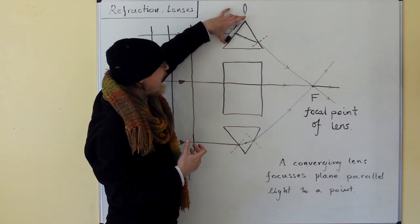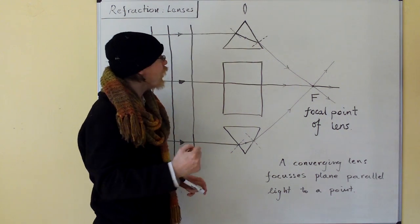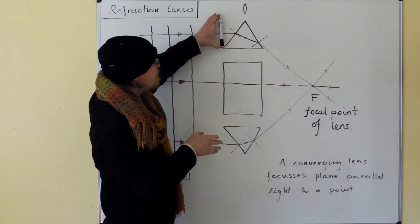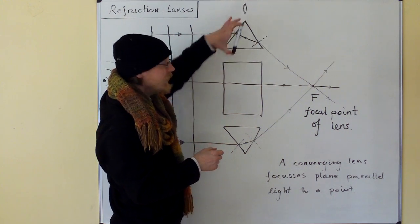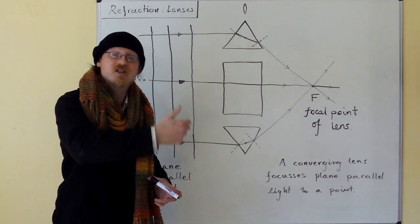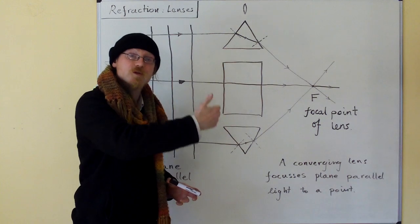So this tends to bend the light towards the normal. The normal here at right angles to the boundary, and the light is being bent towards the normal in going from a less dense medium into a more dense medium, slowing down and being bent towards the normal.